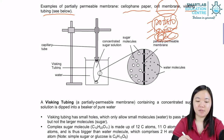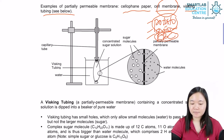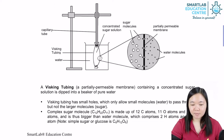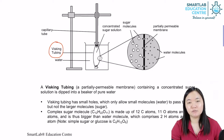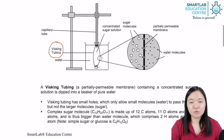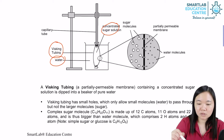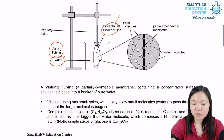Let's look at an example. Here we have visking tubing. Notice they never tell you this is partially permeable — they'll just say it is visking tubing, and it is up to you to know that it is partially permeable. We have a concentrated sugar solution as opposed to distilled water. The concentrated sugar solution possibly has a percentage of maybe six percent sugar.